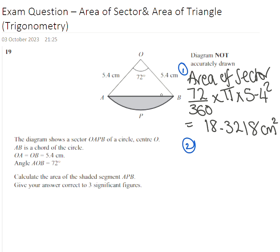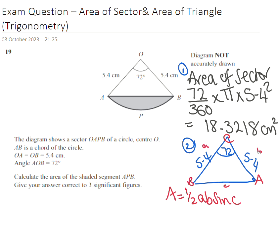We're going to use trigonometry to do that. If I redraw my triangle, we know this is 72, this is 5.4 and this is 5.4. I'm going to use the area formula: a half AB sine C. I'll label my triangle, I'll call this C, this A, and B.